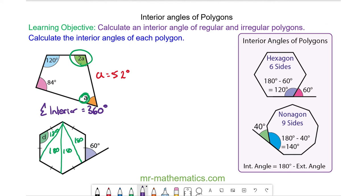So the total interior angles of a hexagon is 720 degrees. And because this is a regular hexagon we know all the interior angles are equal.